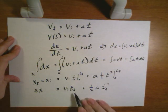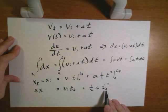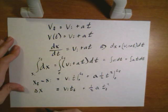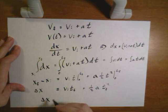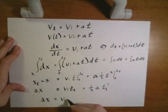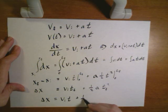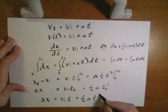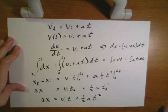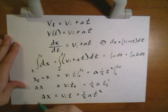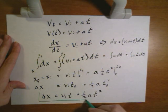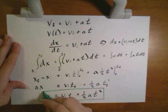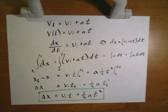And if I write this not using my final time but the more generic t then I can say delta x equals v_i t plus one half a t squared. So that gives me my second really commonly used equation for constant motion. Motion with constant acceleration in one dimension.